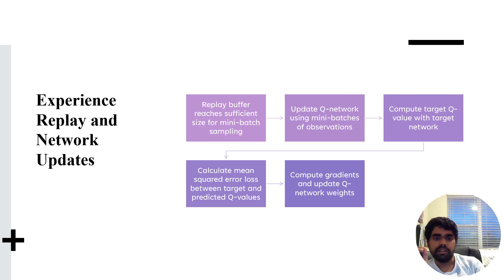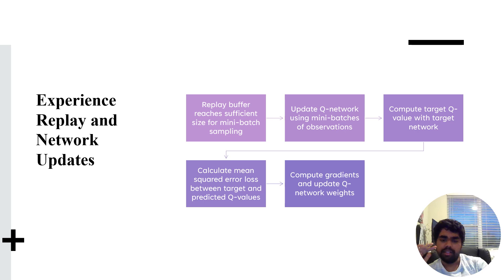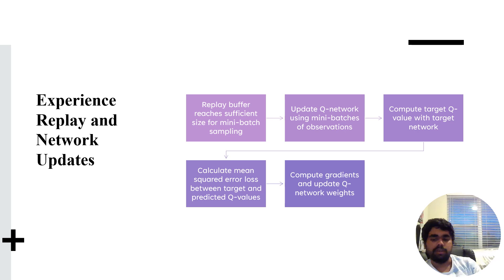For experience replay and network updates, the replay buffer is used to track game history. Once the replay buffer reaches a sufficient size, a mini-batch of observations is used to update the Q-network. The target network is used to compute the mean squared loss between the predicted and target Q-values. Gradients are then computed and the Q-network is updated, repeating until the Q-network is fully converged.